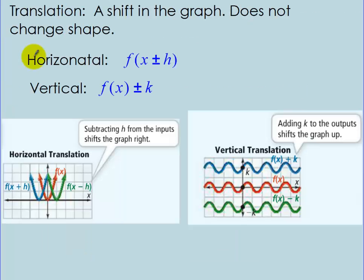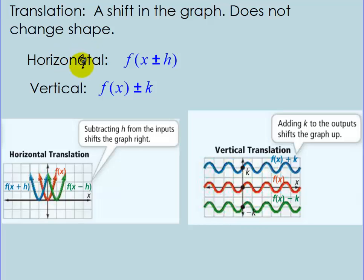A translation of functions is how we get different members of the family. It's a shift in the graph and it does not change the shape — you're shifting it left and right (horizontal translations) or up and down (vertical translations). The way to make a horizontal translation is f(x plus or minus h), and the vertical translation is f(x) plus or minus k. Write these down.